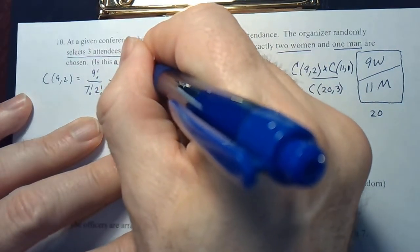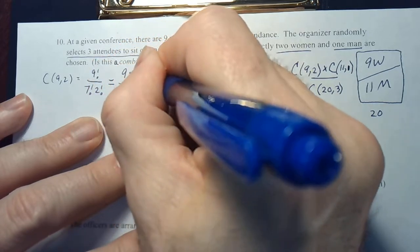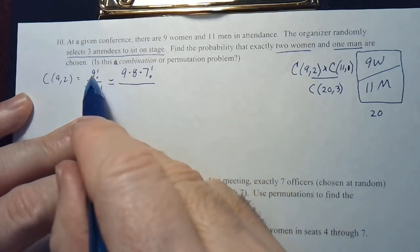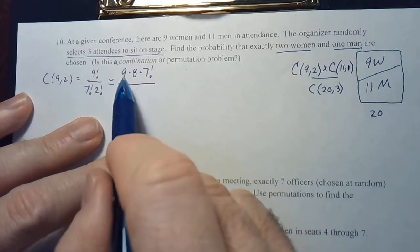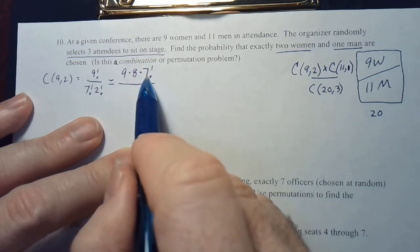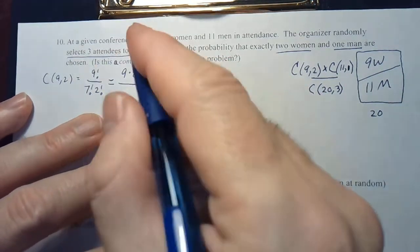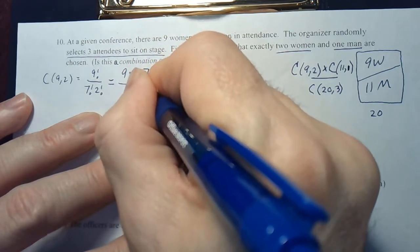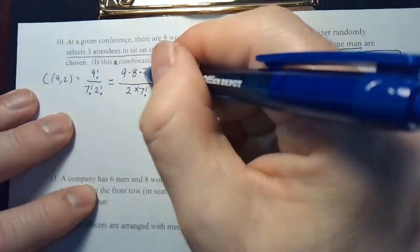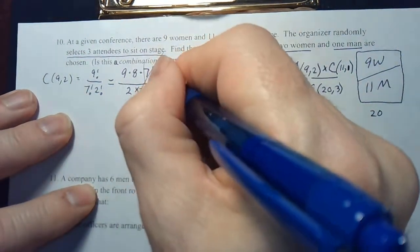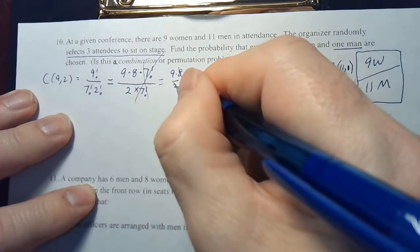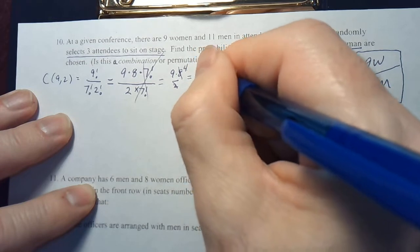Nine factorial is nine times eight times seven factorial. Two factorial is just two times seven factorial. Canceling the seven factorials gives us nine times eight over two. The eight and the two cancel, leaving a four upstairs, giving us 36.